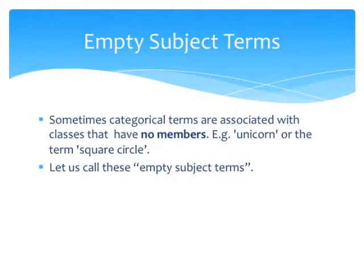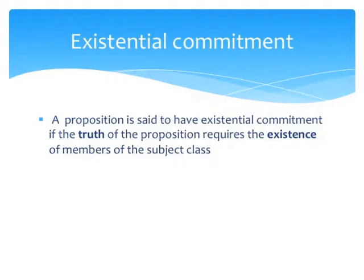Sometimes categorical terms are associated with classes that have no members. For instance, unicorn or square circle as terms. This is because there are no unicorns or square circles. And when these terms are subject terms, we're going to call them empty subject terms. And here's where we come across the notion of existential commitment. A proposition is said to have existential commitment if the truth of the proposition requires the existence of members of the subject class.